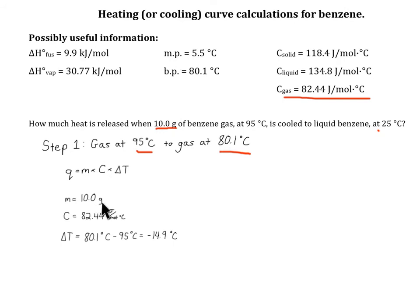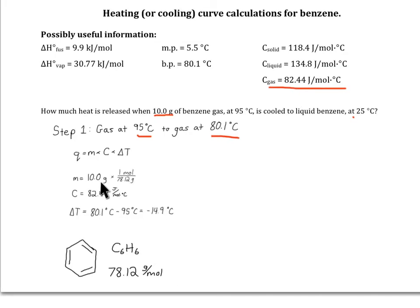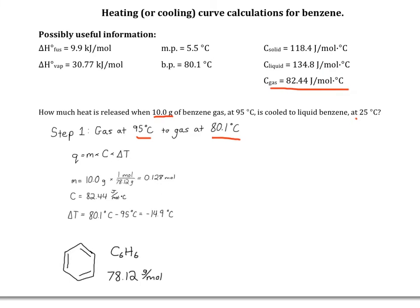Let's take a closer look at our units. The mass is given in grams, but the specific heat capacity of the gas is given in joules per moles per degree C. So we'll need to convert mass into moles before we continue. Recall from the organic chemistry chapter that benzene is a six-membered ring with alternating single and double bonds, C6H6. This gives us a molar mass of 78.12 grams per mole. So 10 grams will give us 0.128 moles.